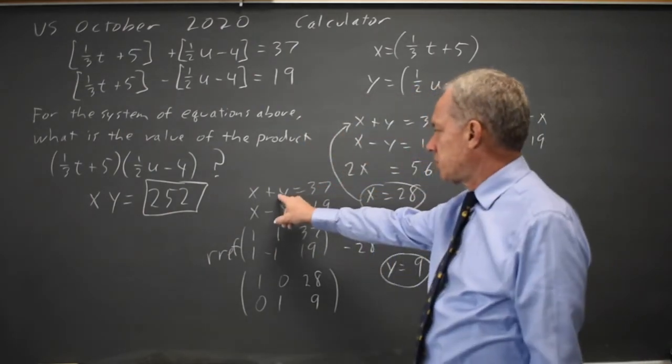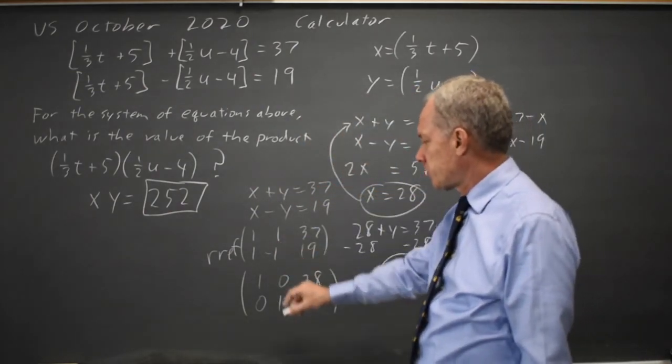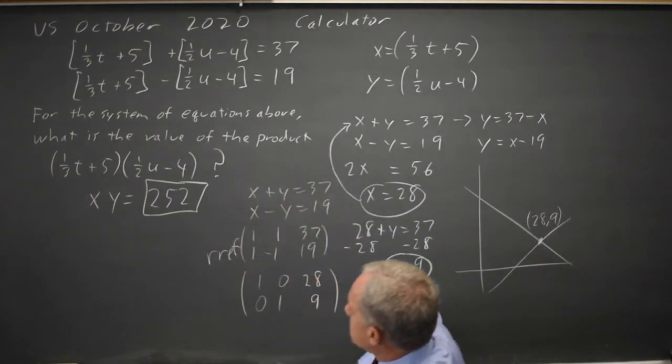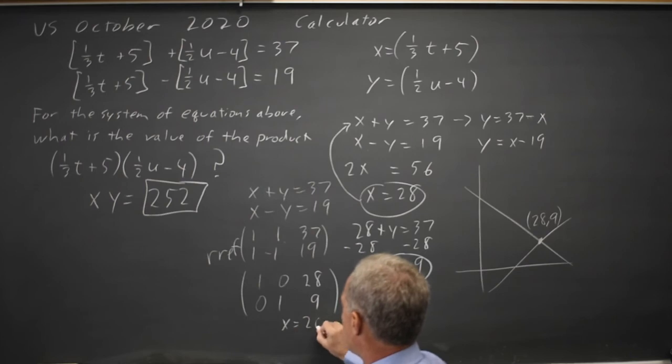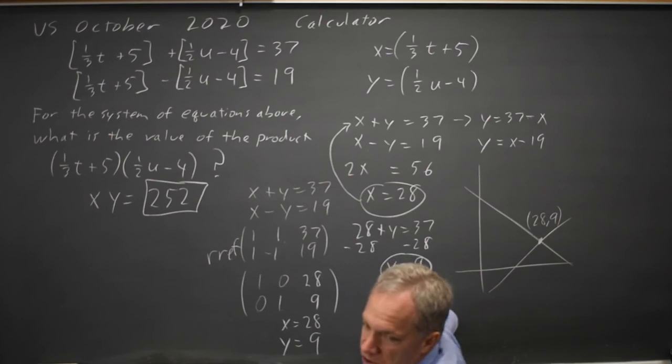Undoing what I did to go from the original system to the matrix, this means 1x plus 0y equals 28, and 0x plus 1y equals 9. Same solution.